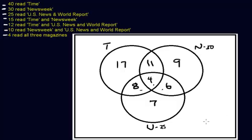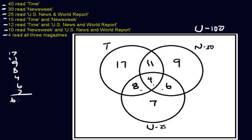The outside region represents all students who don't read any of these magazines. The entire rectangle is our universal set, which has to add up to 100. Adding up all numbers inside: 17, 11, 9, 8, 4, 6, and 7 gives us 62. So the outside region has to be 38. Now all eight regions add up to 100.